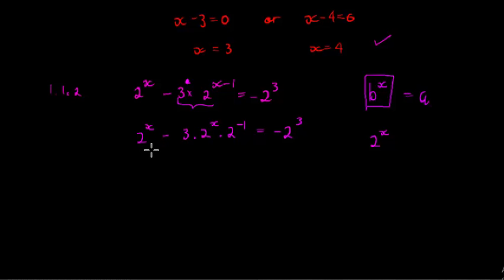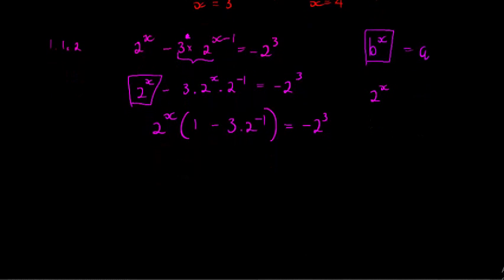Now I've got two terms, both terms have a 2 to the power of X in it, so I can just take it out. It's a common factor. I can say 2 to the power of X, now one person I remember did this, 3 times 2 to the power of negative 1, but they forgot that there's still a 1 left here. When we multiply back we must get the same answer. So that's it, negative 2 to the power of 3. Now my whole aim is to get 2 to the power of X alone, so all I need to do is divide with this bracket.